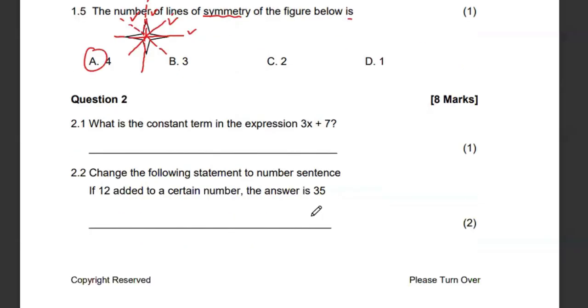And then 2.1, what is the constant term in the expression? Remember we said a constant is basically a number without a letter. So seven becomes the constant. And then change the following statement to a number sentence. If 12 is added to a certain number, the answer is 35. So if 12 is added is a plus, a certain number which we don't know we use variables. You can use X, you can use Y, you can use P, you can use K, any letter. The answer is 35. So that is the mathematical expression.